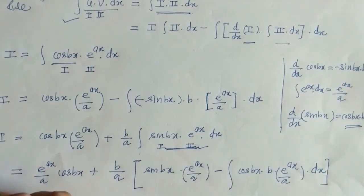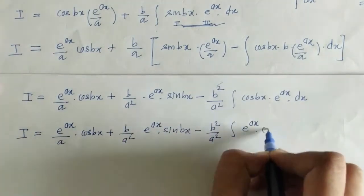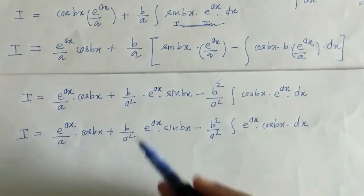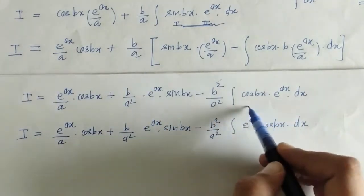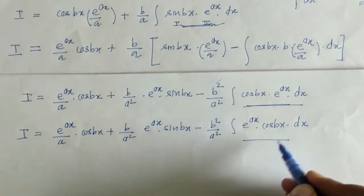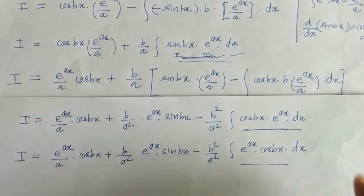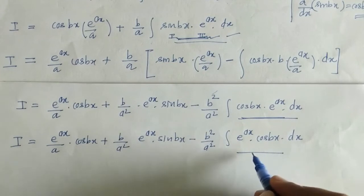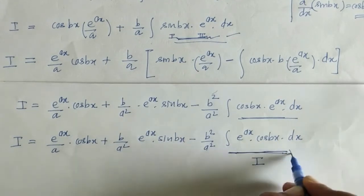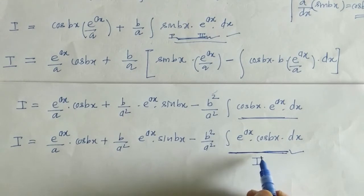We simplify this term, taking b/a inside the bracket. In the next step, we see that to evaluate this remaining integral of cos(bx)·e^(ax), we would have to apply integration by parts again — making this a never-ending process. However, we can recognize that this integral is just the given integral I itself. So we write it as I, which allows us to simplify further.